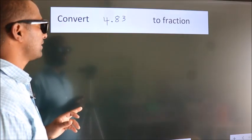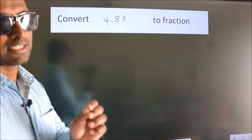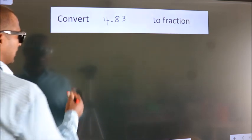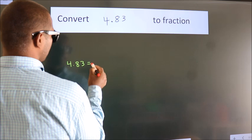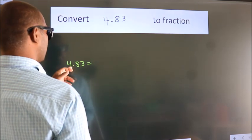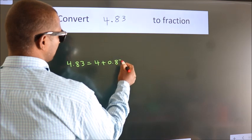Convert 4.83 to fraction. How do we convert? Given is 4.83. First we should break this into 4 plus 0.83.